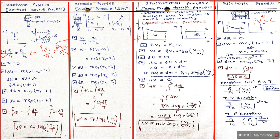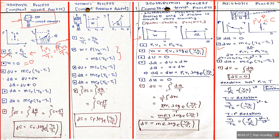For work done: in the isochoric process, volume is constant, so work done is zero. For the isobaric process, work done is either p(v2 − v1) or mR(t2 − t1). For the isothermal process, work done is p1 v1 log to the base e of (v2/v1). For the adiabatic process, work done is (p1 v1 − p2 v2) upon (gamma − 1).